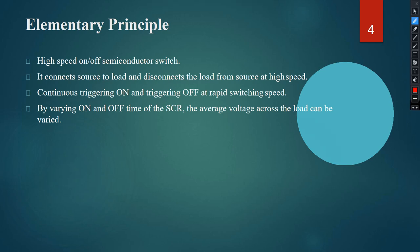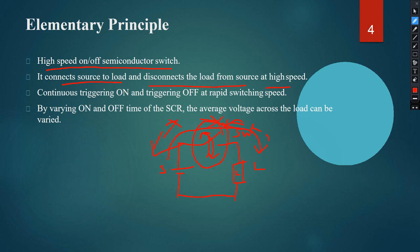The elementary principle of a chopper is that it is a high-speed semiconductor switch. It connects the source to the load and disconnects the load from the source at high speed. Whenever the switch is closed, power flows from the source to the load. When it is open, there is no flow of power. By continuously triggering on and off at rapid switching speed, and by varying the on-off time of the SCR, the average voltage across the load can be varied.